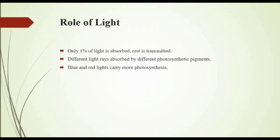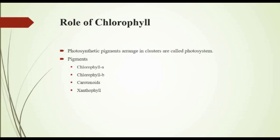Next topic is the role of light, page numbers 122 and 123. Sunlight is necessary for light reactions, so light is absorbed by leaf surfaces through chlorophyll. Light rays of different wavelengths are not only differentially absorbed by photosynthetic pigments but also differentially effective in photosynthesis. Blue and red lights carry out more photosynthesis. Now, role of chlorophyll: photosynthetic pigments are organized in clusters called photosystems in thylakoid membranes of chloroplast. Chlorophyll A is the main photosynthetic pigment and effectively absorbs red and blue light. Other accessory pigments include chlorophyll B, carotenoids, and xanthophyll.